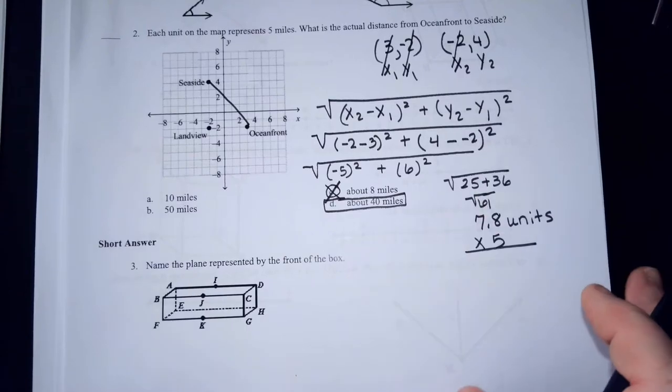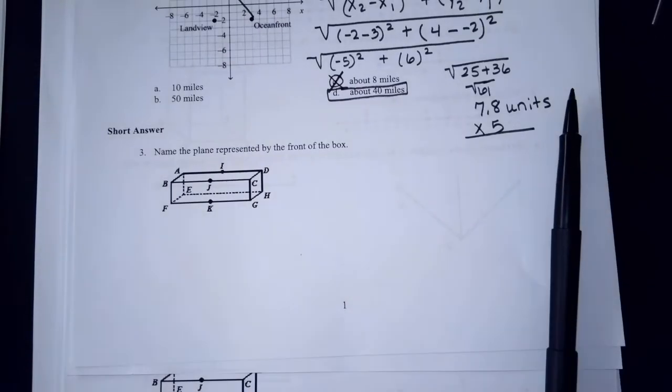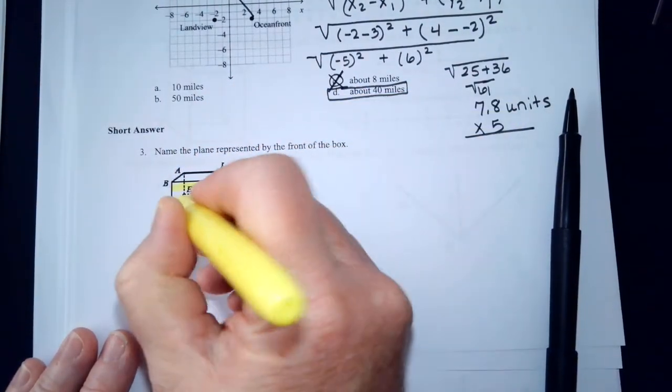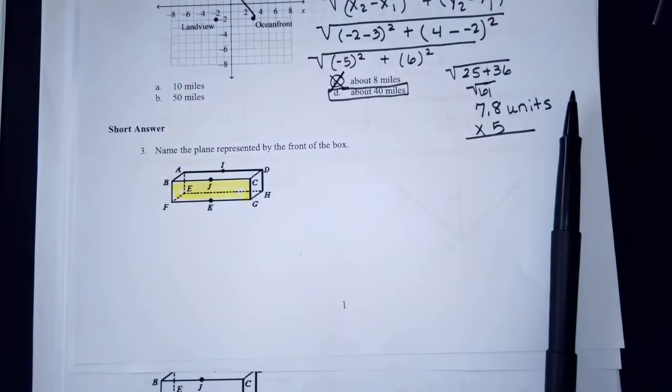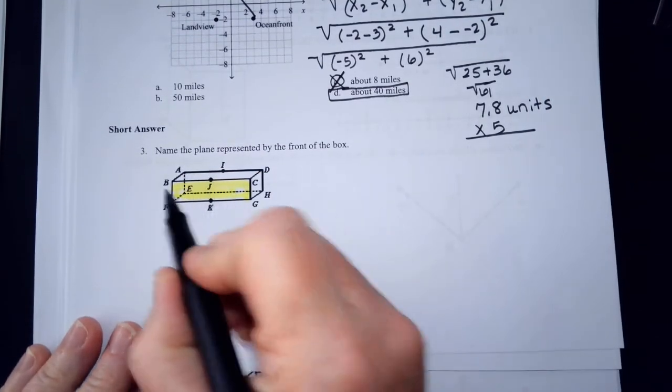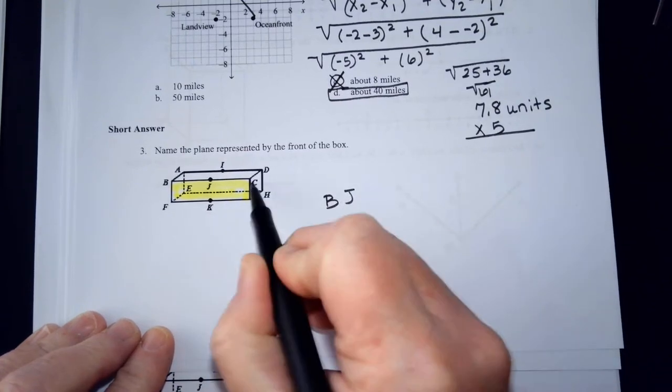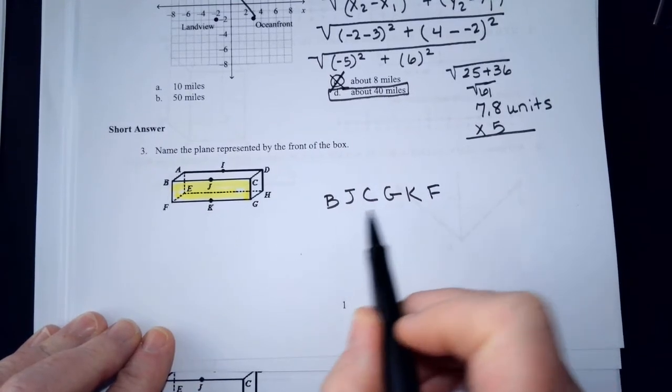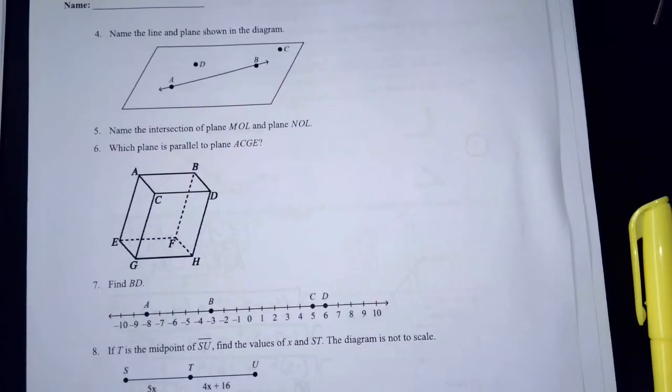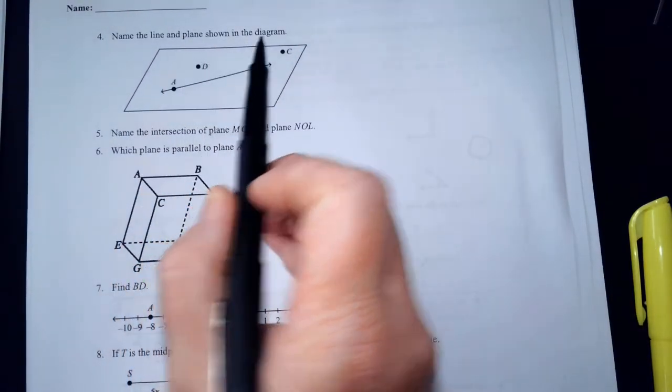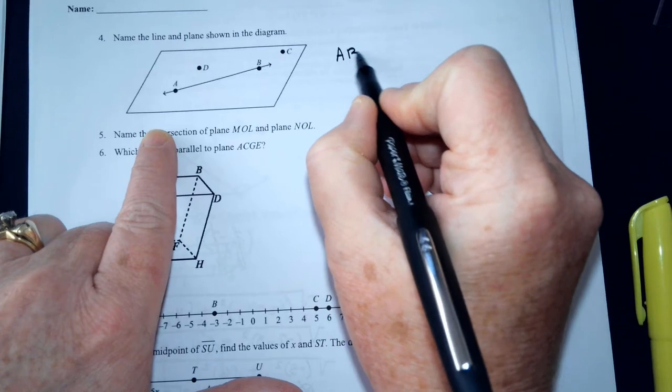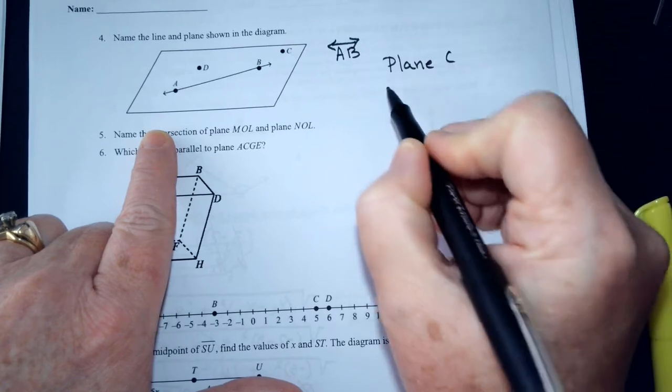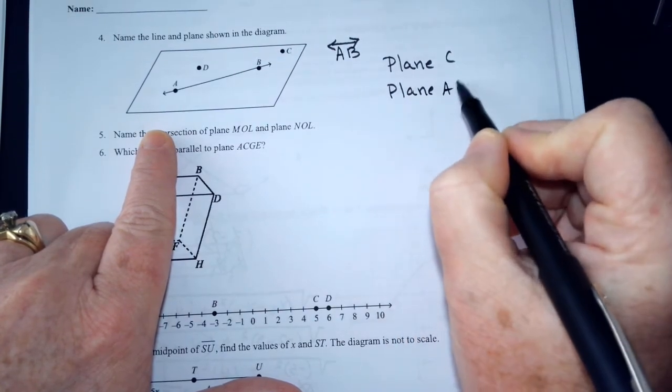Name the plane represented by the front of the box. The front of the box is the plane here, and the letters involved in that plane are B, J, C, G, K, and F, and you could use any of those three. Or, name the line in the plane shown in the diagram. The line is A, B. The plane, you could call it plane C. You could also name it plane A, B, D.